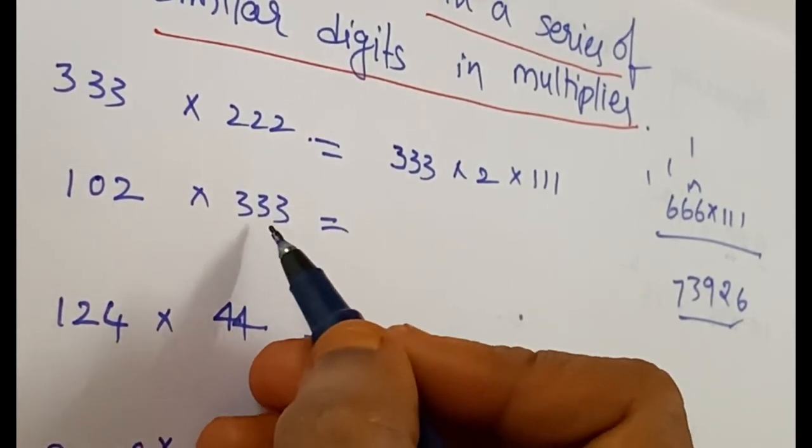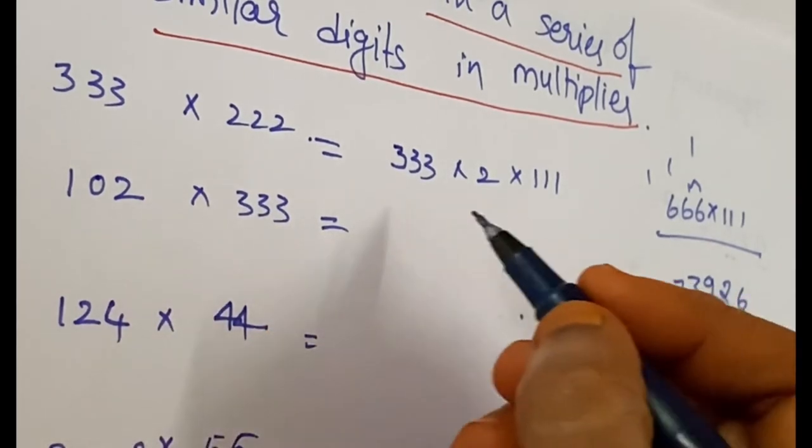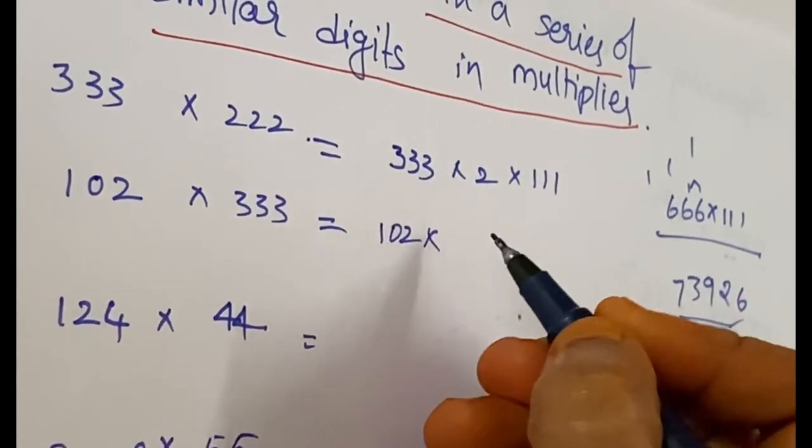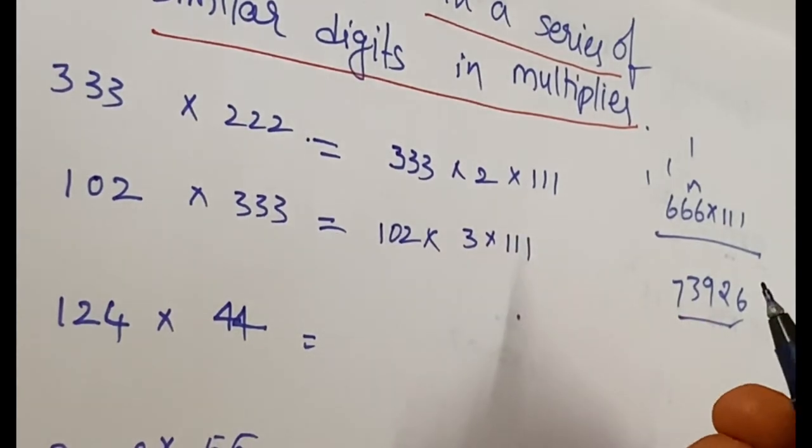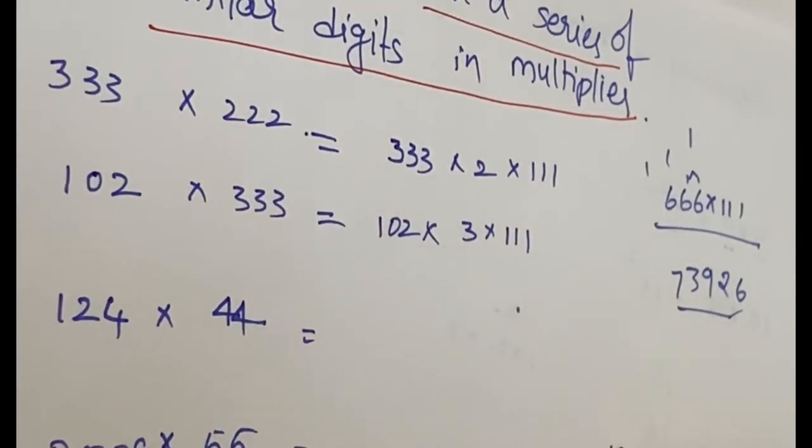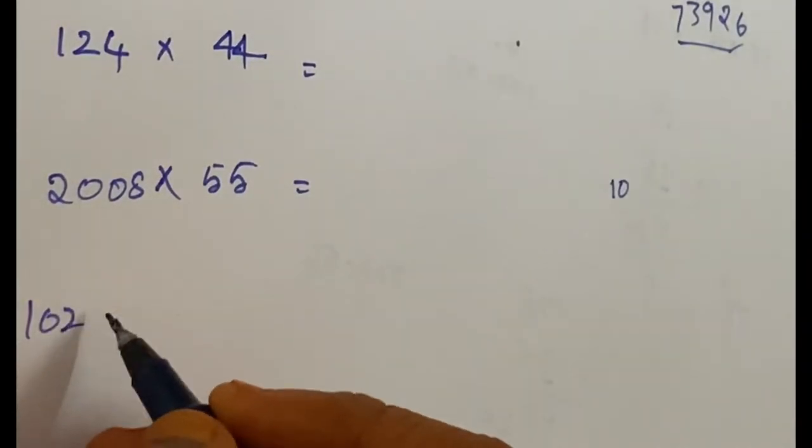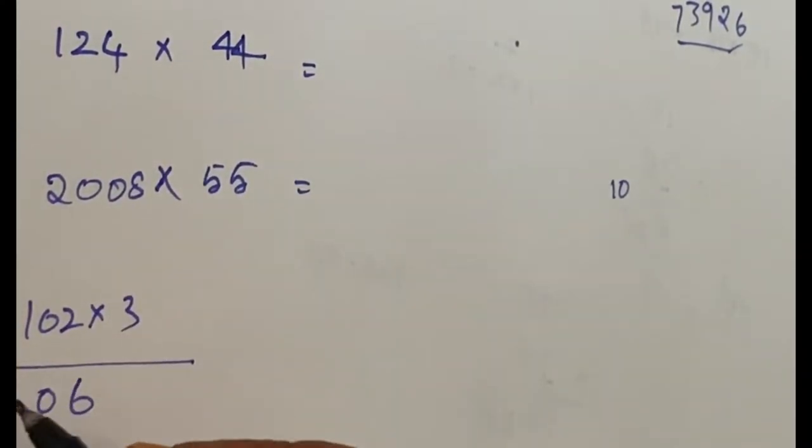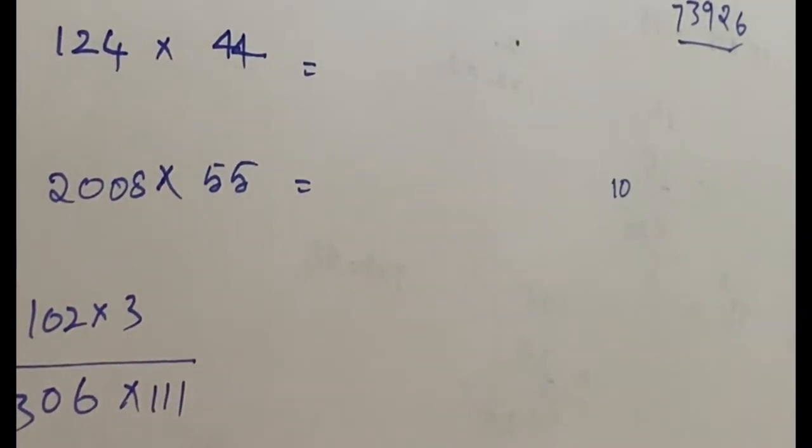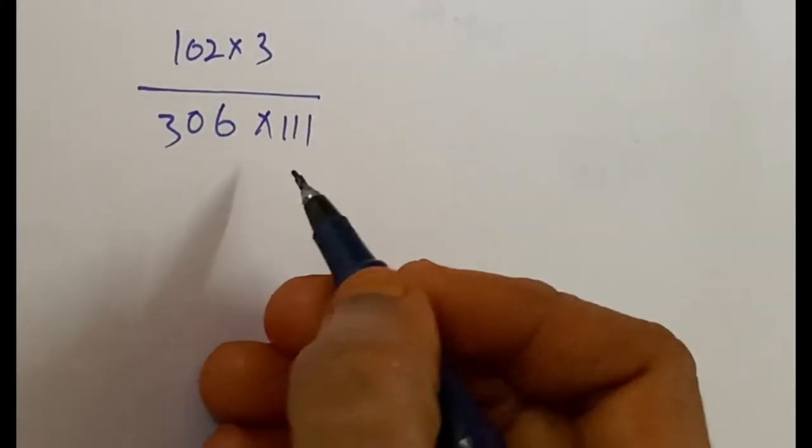We can convert 333 into 102 into 3 into triple one. So here, 102 into 3: 3 twos are 6, 0, 3. That's 306 into triple one.